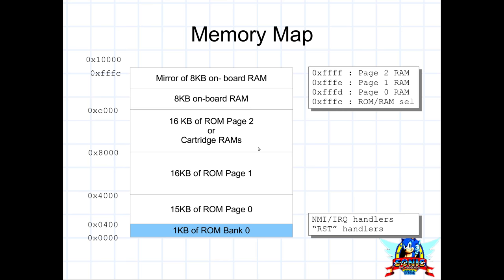So how do we page these things? There are four magic addresses: if you write to 0xFFFF you're selecting what the second page will be — RAM or ROM. Likewise 0xFFFE and 0xFFFD select pages 0, 1, or 2 — choosing which slice of ROM appears there. In 0xFFFC you can configure whether the cartridge RAM or ROM appears at the 8000 to C000 region. That was only supported for cartridges that had both RAM and ROM in them.